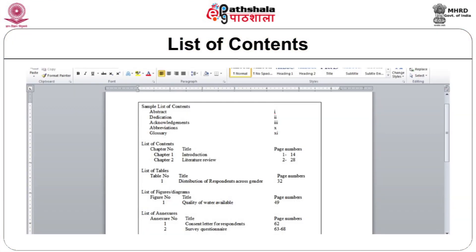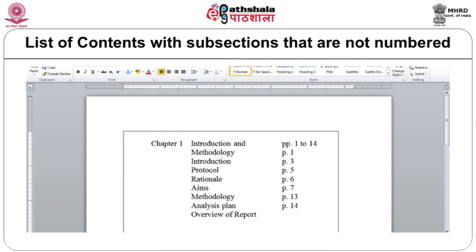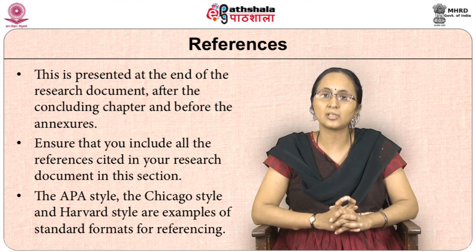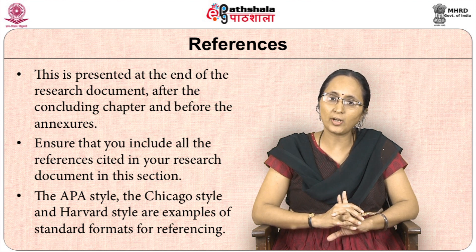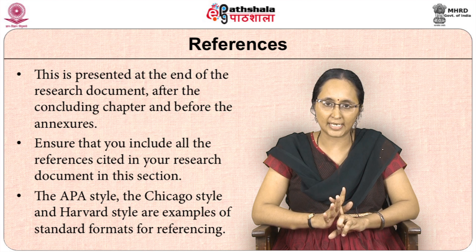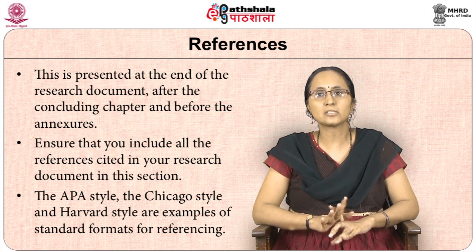There are two examples of lists of contents on screen — one where subsections are numbered and one where they are not. The next common aspect is references, presented at the end of the research document after the concluding chapter and before the annexures. Ensure that you include all references cited in your document. Commonly used styles are APA, Chicago, and Harvard style. Check with your university or organization which format they prefer and follow accordingly.